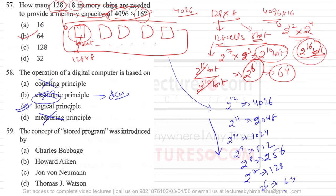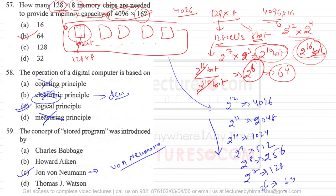Question 59: The concept of stored program was introduced by John von Neumann. That is why we also call it von Neumann architecture — you store the program and then run it. It is not Charles Babbage, not Howard Aiken, not John J. Watson. John von Neumann introduced the concept of stored program architecture.